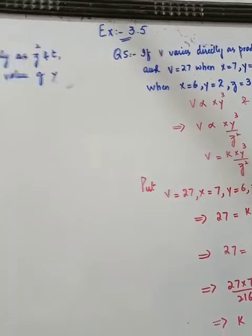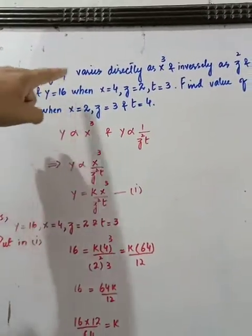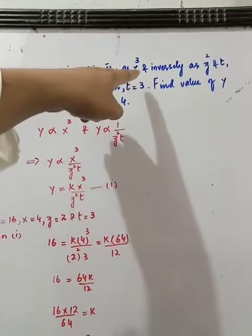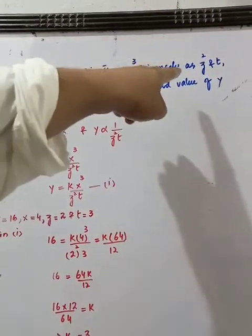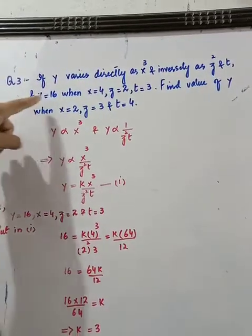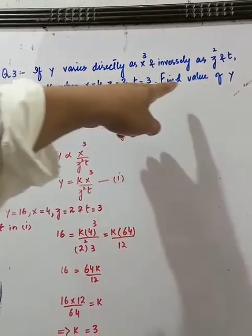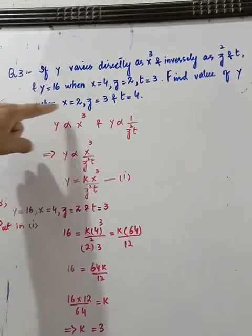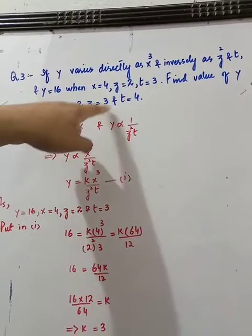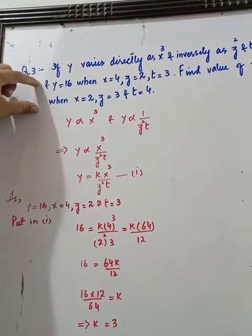Great, 10th grade exercise 3.5, very important questions. Question number 3: If Y varies directly as x cubed and inversely as z squared and t, and Y is equal to 16 when x is equal to 4, z equals 2, t equals 3, find value of Y when x is 2, z is 3, and t is 4. I will tell you how to solve them.